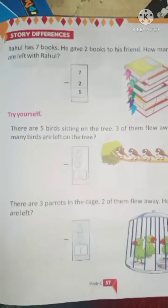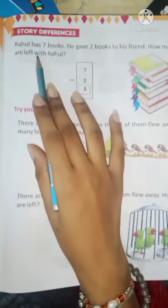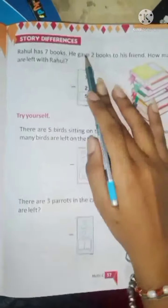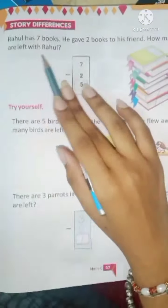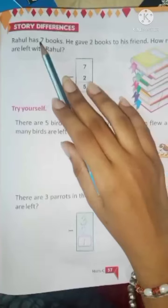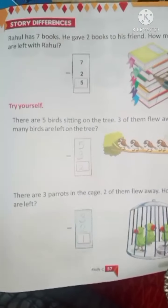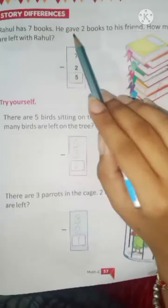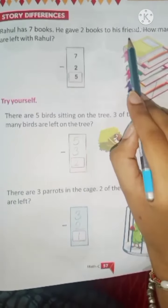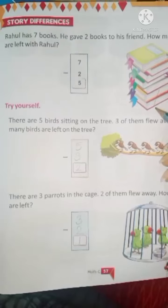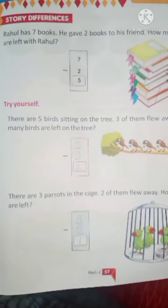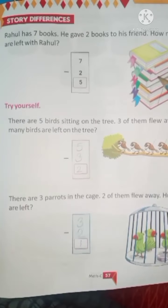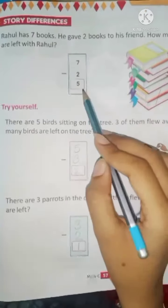Now, the first one is already done for you, that is Rahul has 7 books. He gave 2 books to his friend. Now, tell me how many books are left with Rahul. So, Rahul ke paas kitni books thine? 7. Here you can see 1, 2, 3, 4, 5, 6, 7 books. So, we will write here 7. Rahul ne 2 books apni friend ko de di. So, we will cut this 2. Here we will write here minus 2. So, now tell me Rahul ke paas kitni books bachhi hai? 1, 2, 3, 4, 5. So, here we will write here 5.